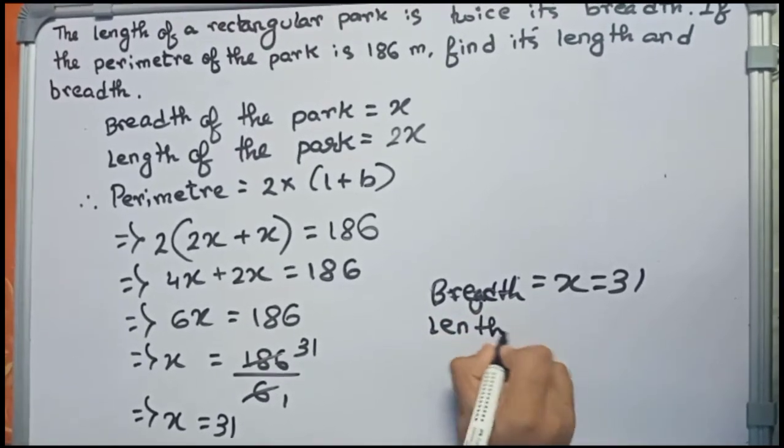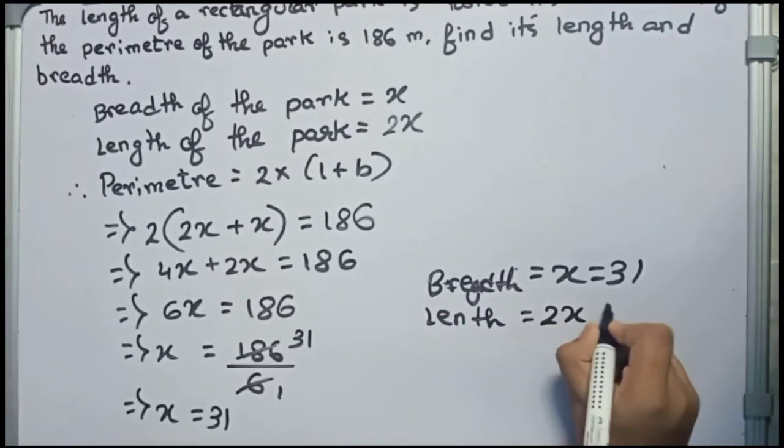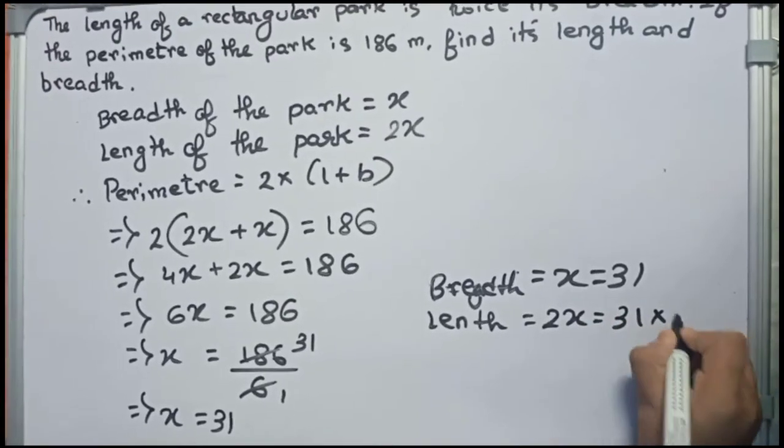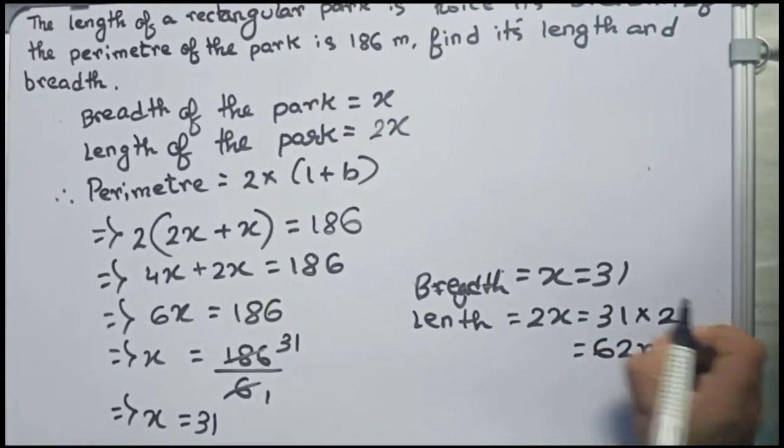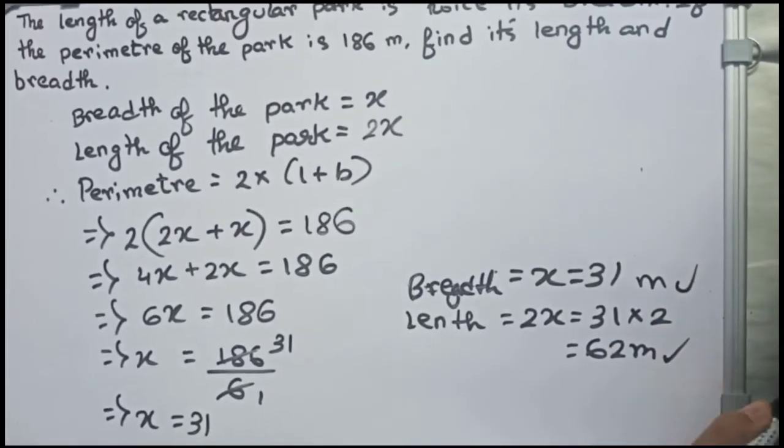Now length equals to 2x equals to 31 into 2, which is 62 meters. So this is our final answer.